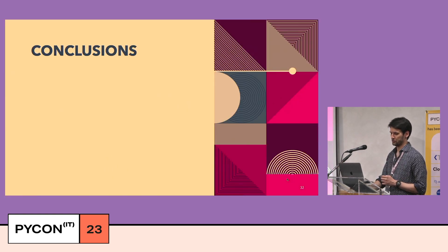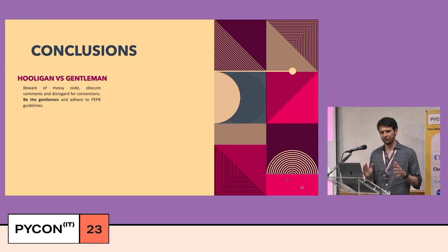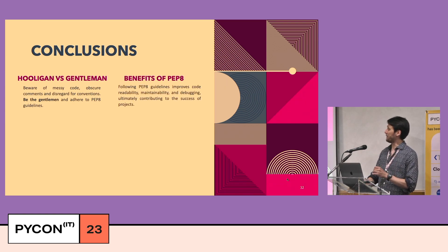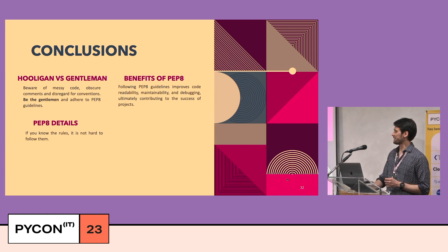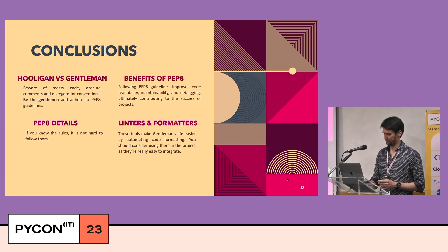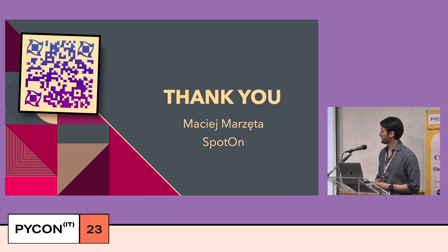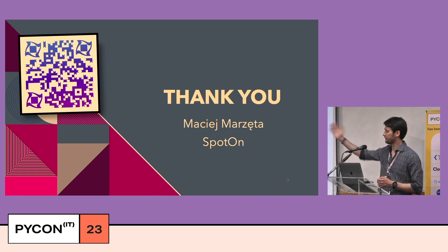Let's move to the conclusions. First, hooligan versus gentleman: beware of messy code, obscure comments, and disregard for conventions — be the gentleman and adhere to PEP8 guidelines. Second, the benefits of PEP8: following PEP8 improves code readability, maintainability, and debugging, ultimately contributing to the success of the project. Third, PEP8 in details: if you know the rules, it's not that hard to follow them. Finally, linters and formatters make a gentleman's life easier by automating code formatting — consider using them in your project as they are really easy to integrate. Thank you very much.